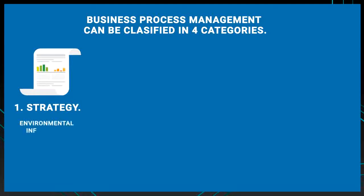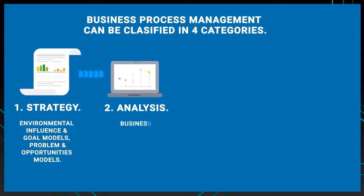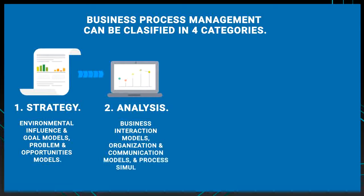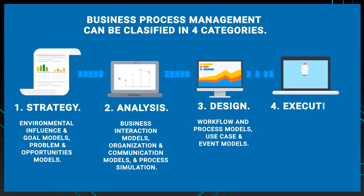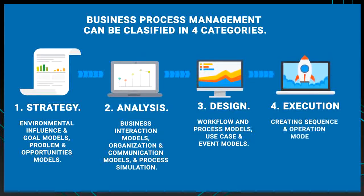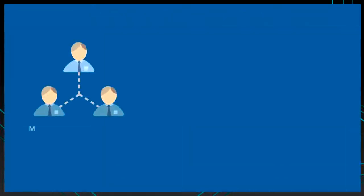Strategy utilizes tools like environmental influence and goal models, and problem and opportunities models. Analysis uses tools like business interaction models, organization and communication models, and process simulation. Design involves workflow and process models, use case and event models. Execution involves creating sequence and operation models, business classes, and system models.